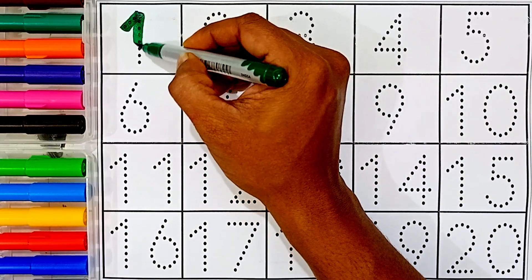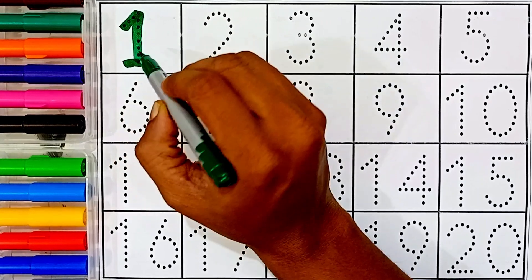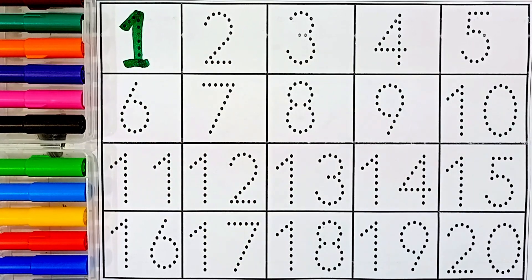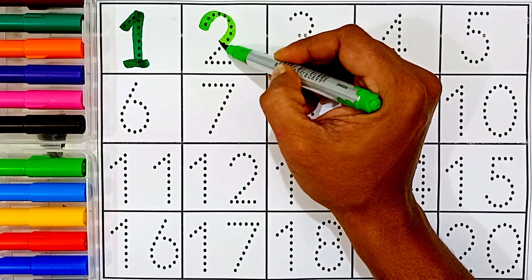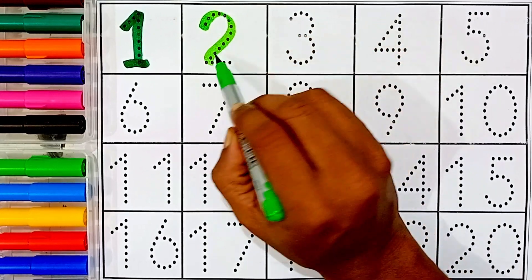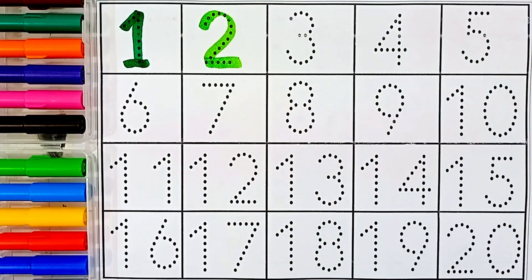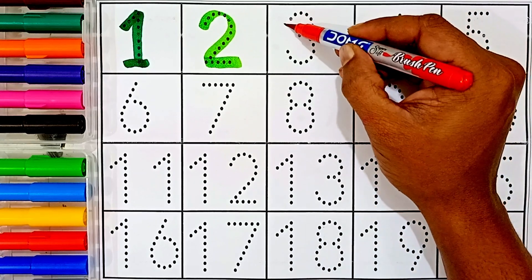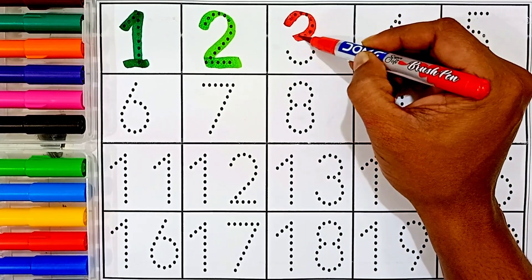One — this number name is one. One ke baad aata hai two — this number name is two. Two ke baad aata hai three.